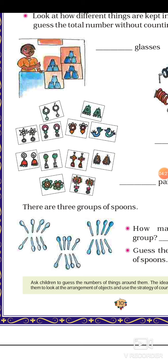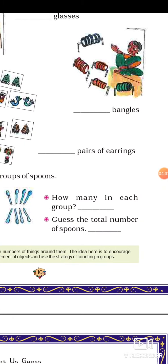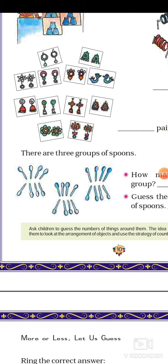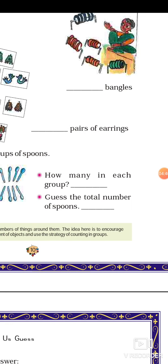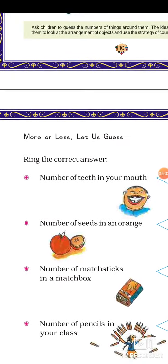So there are 3 groups of spoons. Can you tell me how many in each group? In each group there are 8 spoons. So guess the total number of spoons: 8 plus 8 plus 8. Total 24. So total 24 spoons are there.